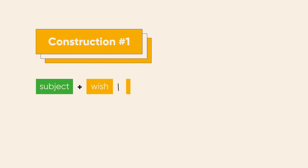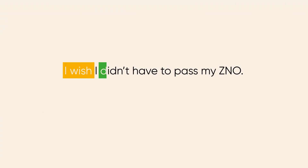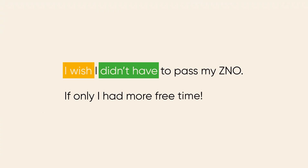Let's have a closer look. Construction number one: subject plus wish or if only plus past simple. This construction is used to talk about something that we would like to change about our present. It may sound strange, but the tense we use here is not present simple, but past simple. It's similar to second conditional sentences, which also describe unreal situations in the present. For example: I wish I didn't have to pass my ZNO. If only I had more free time.